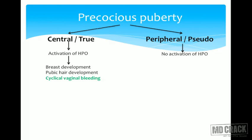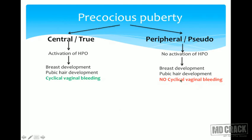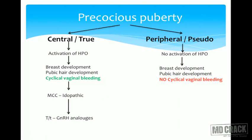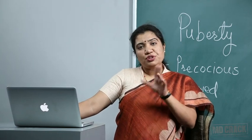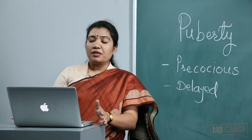In central precocious puberty, early HPO axis activation leads to thelarche, pubarche, and cyclical bleeding. In pseudo precocious puberty, breast and pubic hair development occur but cyclical vaginal bleeding is absent. Central precocious puberty is most commonly idiopathic, and treatment is with GnRH analogues, which cause continuous GnRH secretion that suppresses FSH and LH, halting further pubertal changes.